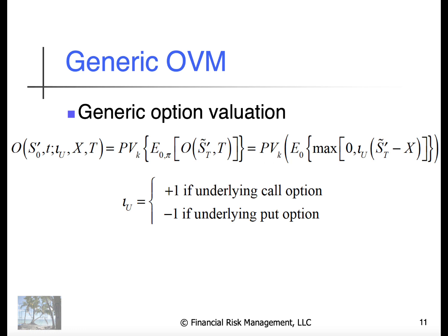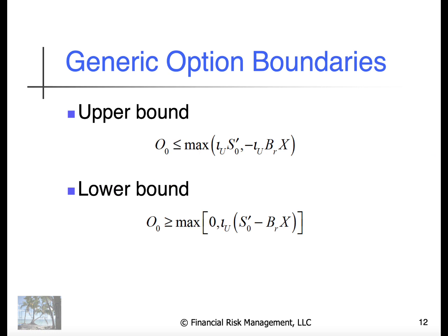At this point we really don't make any assumptions about continuous trading or dynamic rebalancing or anything. The upper and lower bounds can be expressed generically with the indicator function. The upper bound really plays no role, but I can compress it into one equation for both calls and puts.